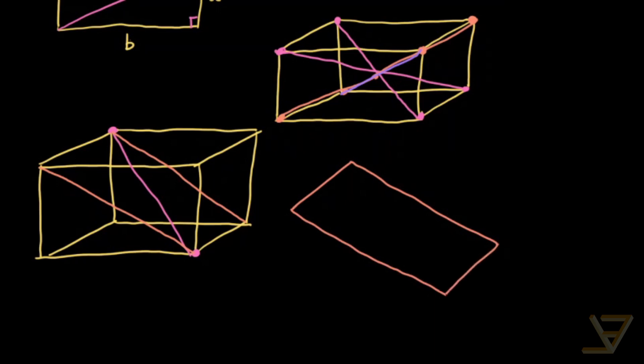And this is a rectangle, which you can prove using 3D geometry. Let's say this side is B, this side is A, and this side is C.